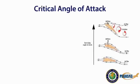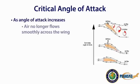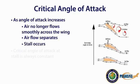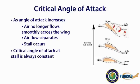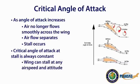The critical angle of attack is the point at which, as the angle of attack increases, air will no longer flow smoothly over the wing. When this happens, the airflow separates from the surface of the wing, resulting in a stall. The critical angle of attack, or the angle at which the stall occurs, is always constant for a given airfoil in a given configuration. Since the stalling point is only affected by the angle of attack, it is important to note that the wing can stall at any airspeed and any attitude.